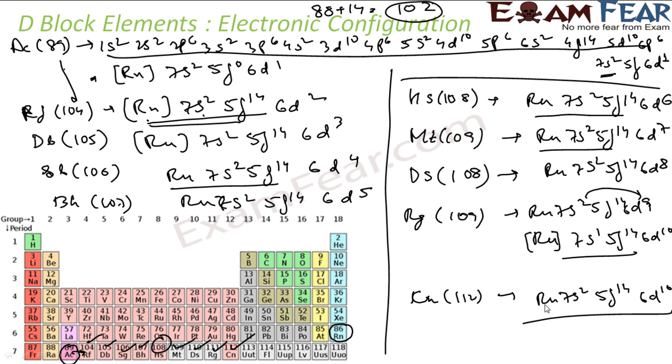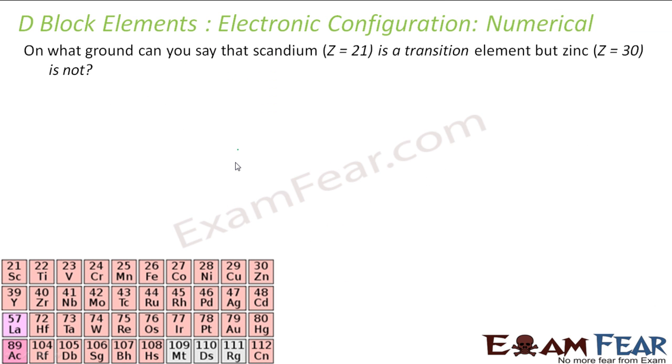So this is all about electronic configuration of d block elements. Let's take one numerical: on what grounds you can say that Scandium, atomic number 21, is a transition metal, but Zinc, atomic number 30, is not a transition metal? Let's write the electronic configuration of these two elements. Scandium atomic number 21, we know that the configuration is Ar 3d1 4s2. We have derived this electronic configuration just now. And the definition of transition metal itself is: metal which has incompletely filled d orbital in ground state or oxidized state.